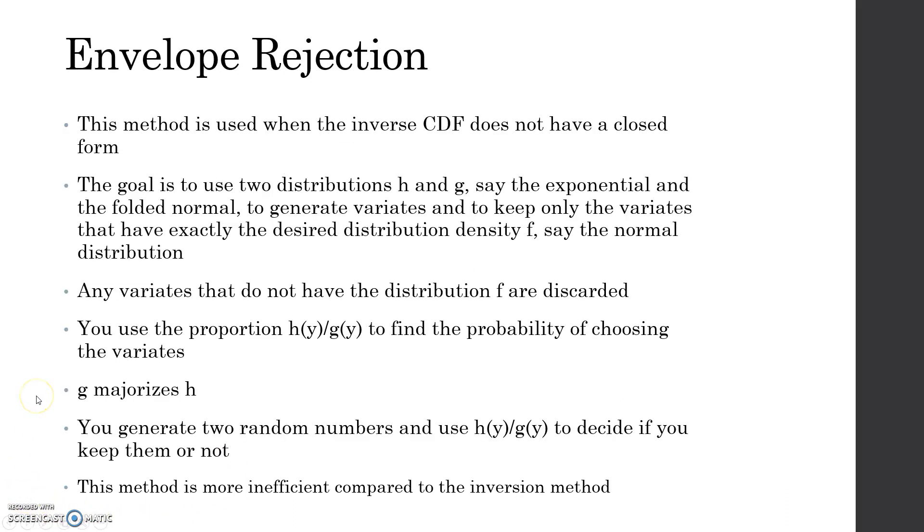A second method for generating random variance is the envelope rejection method. This method is used when the inverse CDF does not have a closed form like we did in the last example. The goal here is to use two distributions, H and G, say the exponential and the folded normal for example, to generate variance and then to keep only the variance that have exactly the desired distribution density F, say the normal distribution.